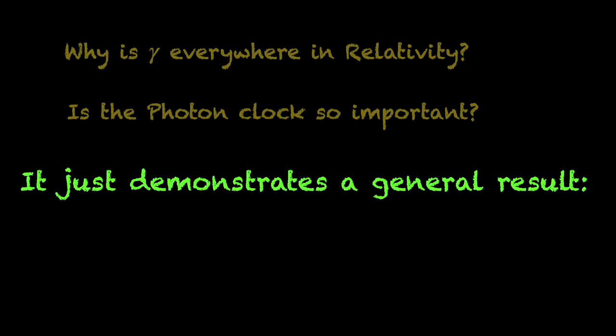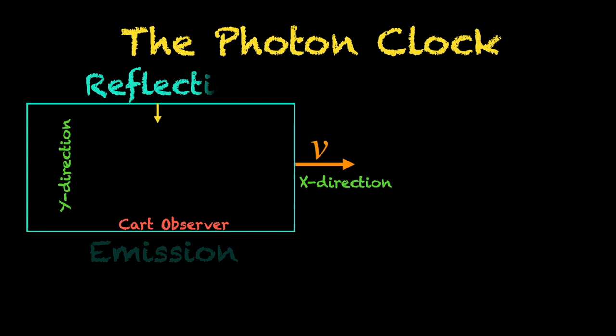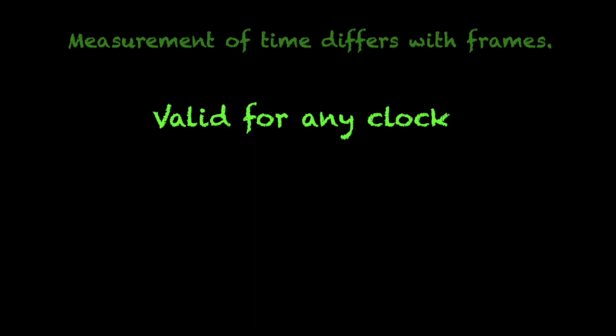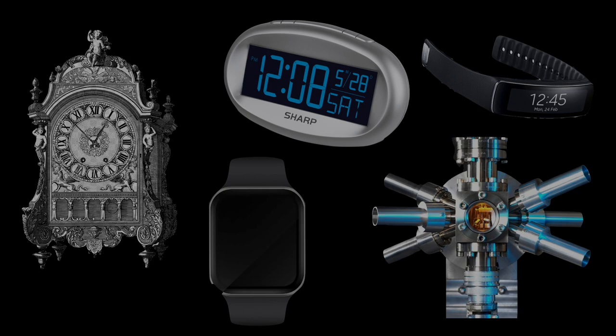Is the photon bouncing clock such a big deal? Not really. The photon clock just provides a straightforward demonstration that different frames calculate or measure different time intervals between a given pair of events, the emission and reception events of the photon in this case. That is, time ticks differently in different inertial frames. But this result is not limited to photon clocks only. It is a very, very general result.